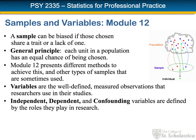Module 12 this week takes up the notion of samples and variables. A sample can be biased if the ones chosen share a trait or share the lack of a particular trait. In general, we want a sample where every unit in the original population has an equal chance of being chosen. In Module 12, we see several different sampling methods, each of which will achieve this, as well as some other types of samples and the problems they might cause.